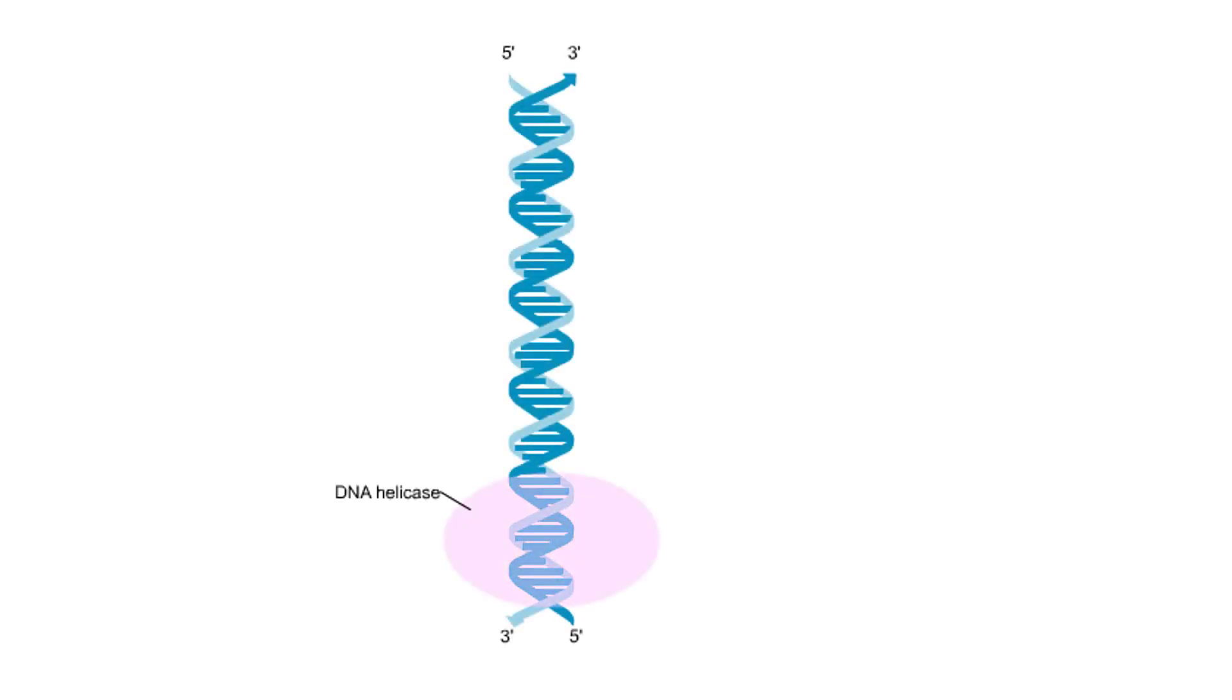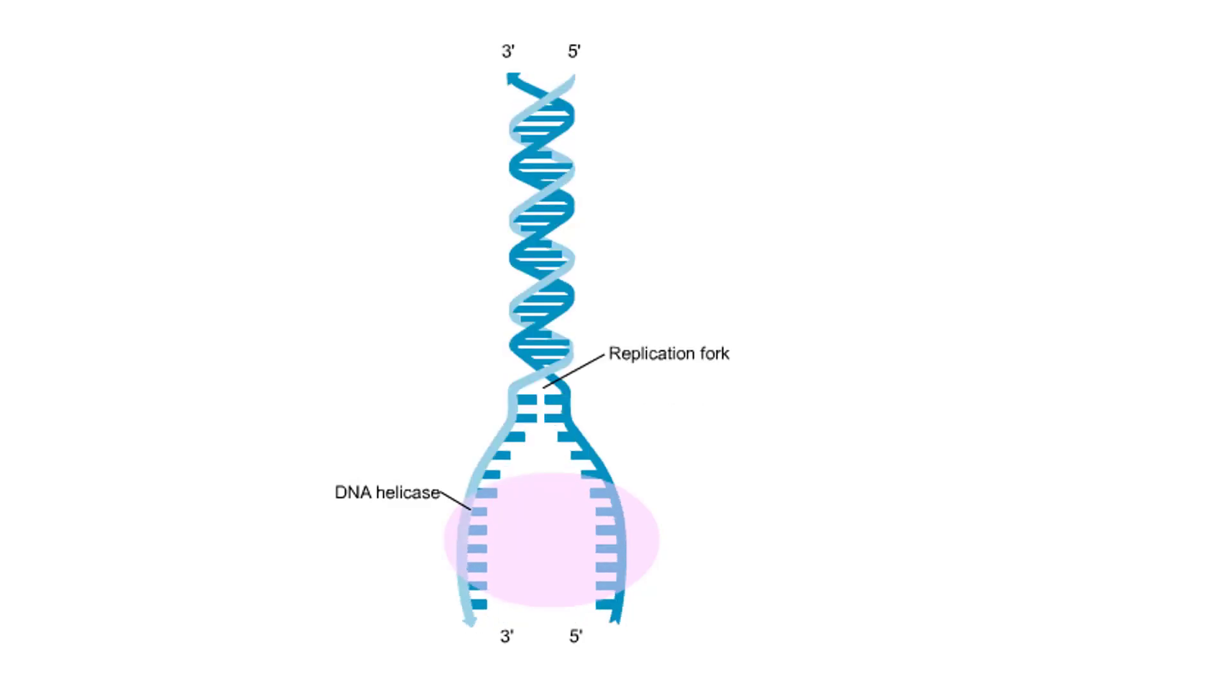During DNA replication, the enzyme DNA helicase causes the two strands of the double helix to unwind and separate, forming a replication fork.